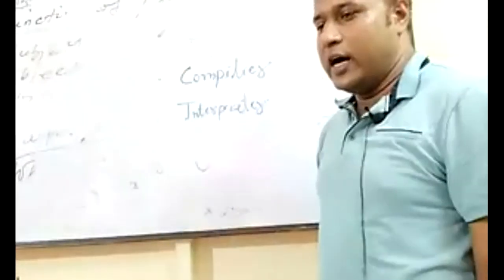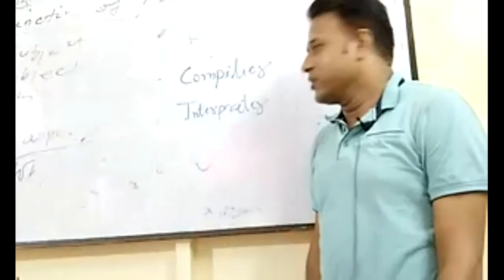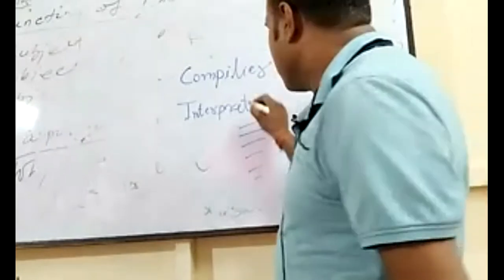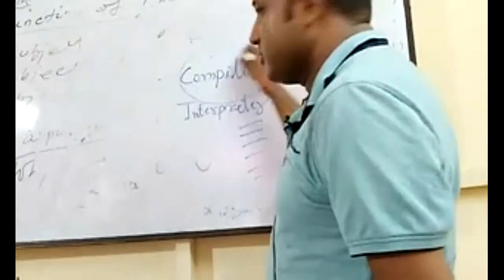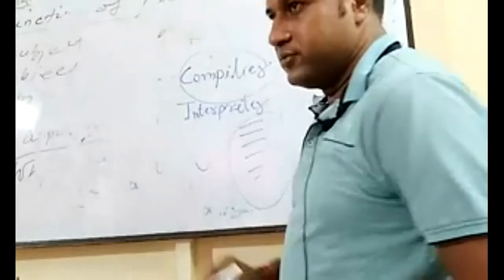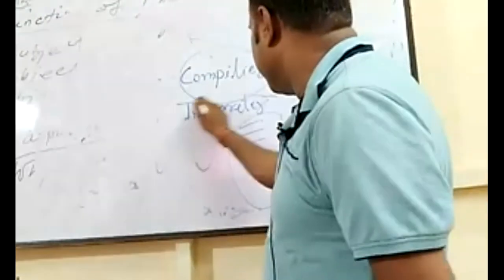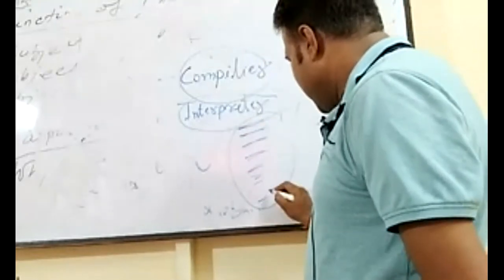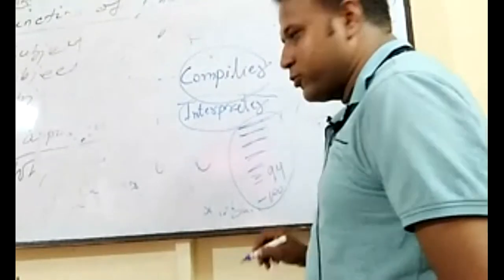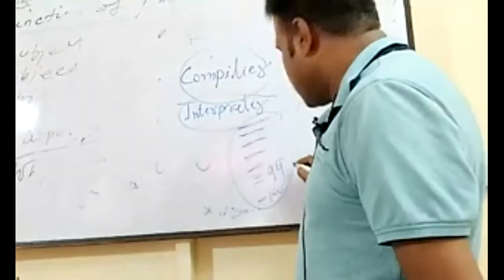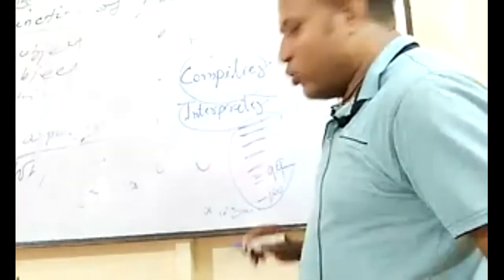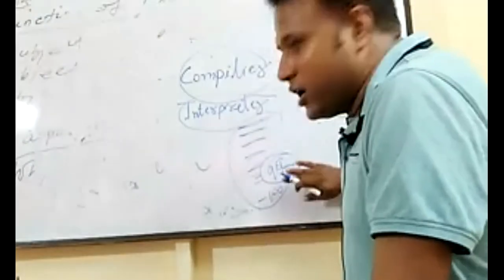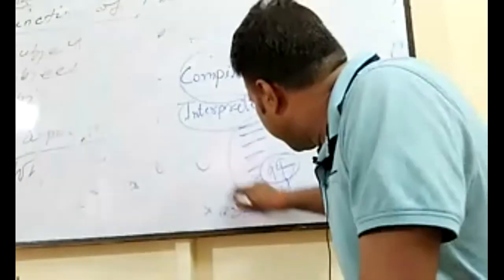Let me give you an example. If I write 100 lines of code using an interpreter, it checks line by line. If there is a problem at line 99, I correct it and the interpreter goes back to the first line and starts again. With a compiler, all the program is taken at once and executed.